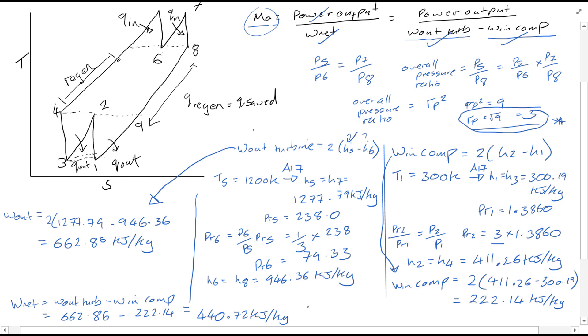Mass flow rate is equal to 90 times 10 to the 3 kilojoules per second, of course converting this into the correct unit, divided by 440.72 kilojoules per kg. Canceling the units, you'll find the mass flow rate equal to 204.21 kilograms per second.